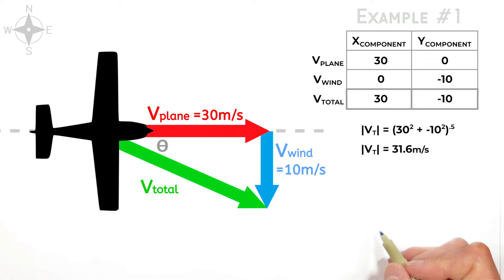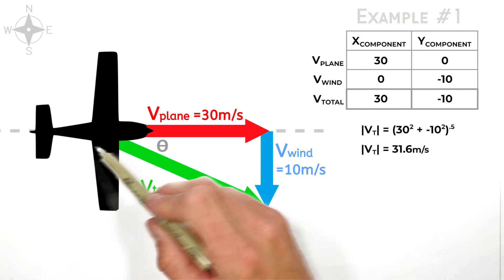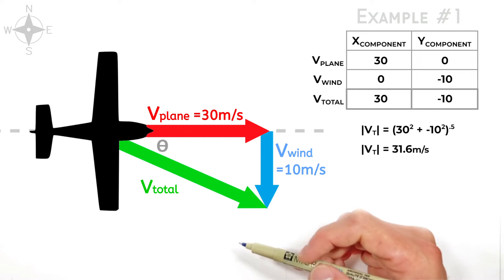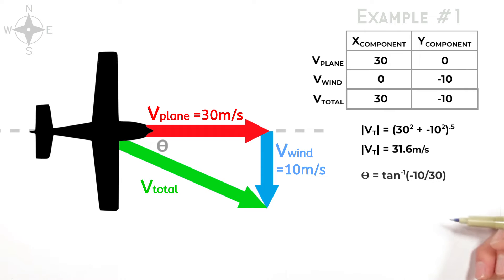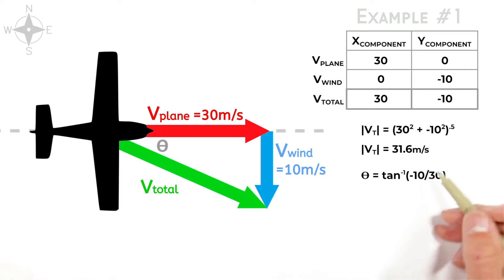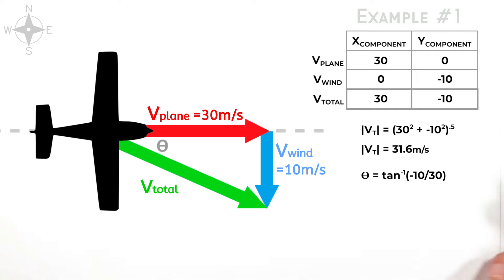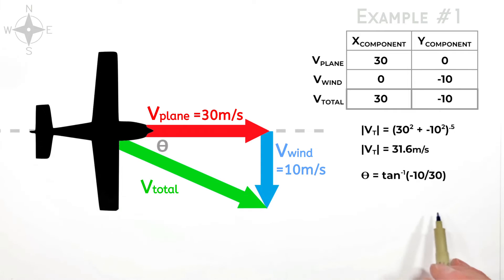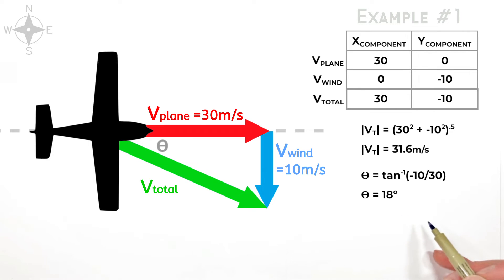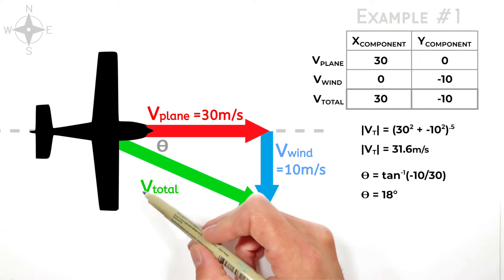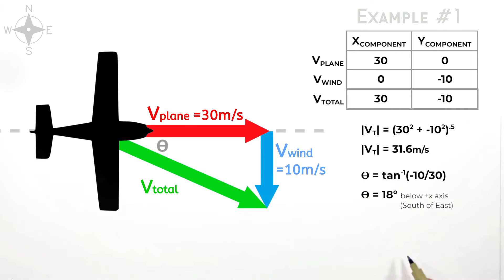Next, to solve for the angle, knowing both the adjacent and opposite sides of this right triangle, we solve for theta: theta equals the inverse tangent of 10 over 30. There's a negative on the 10, but we can ignore it to get the numeric value — the calculator gives 18 degrees. It's up to us to interpret what those 18 degrees mean: in this case, 18 degrees below the positive x-axis, or what we would call 18 degrees south of east.